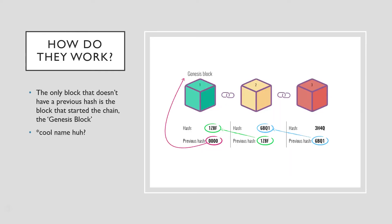Looking at this illustration — it's as apt as it looks, a block with chains — that is a blockchain. Each block has a previous hash, so block number 3 has the previous hash as the actual hash of block number 2, the preceding block. Block number 2 also has as its previous hash the hash of block number 1. Block number 1 is the only one that has no previous hash, because it's the first block on the chain. We call that the Genesis block.